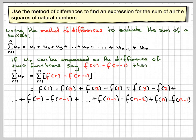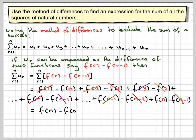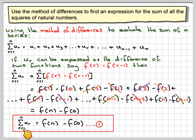We can do a little bit of collapsing here — telescoping the sum. We see that f(1) minus f(1) cancels out, f(2) minus f(2) cancels out. Similarly, f(3) cancels out, the general term cancels with the next one, and the last but one term cancels with this. So we're left with f(n) minus f(0).